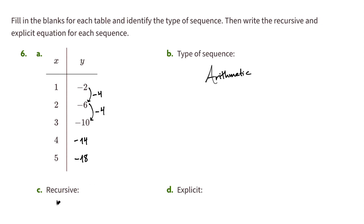The recursive equation f(n) is we take the previous one, f(n-1), and we subtract 4 each time.